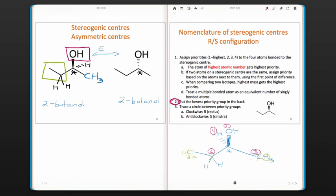The next step is to trace a circle between the priority groups. So notice in this case, we have one, two, three. And when we draw a line from one to two to three, that line goes in an anti-clockwise direction, which tells us that the configuration of this stereocenter is S. It's also almost like we're drawing an S as we go from one to two.